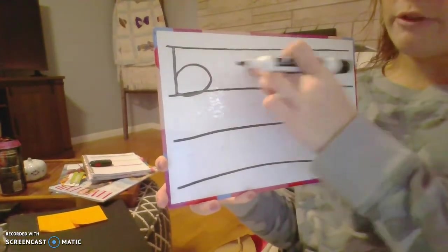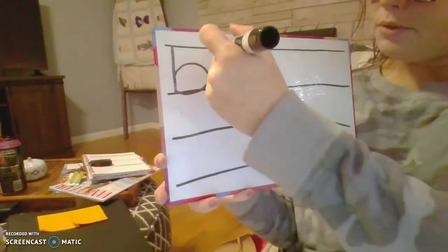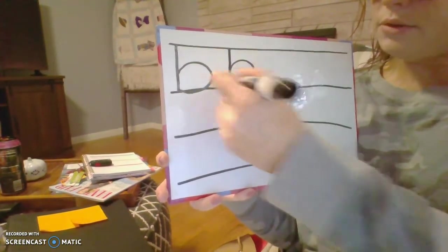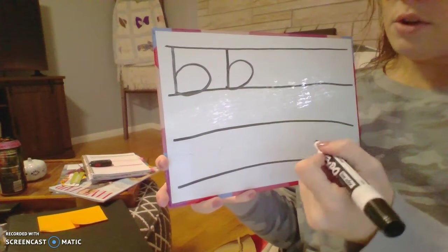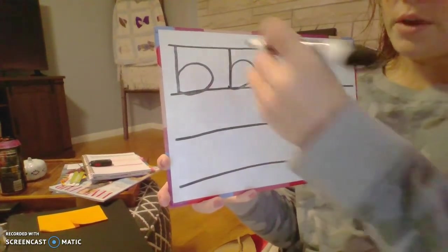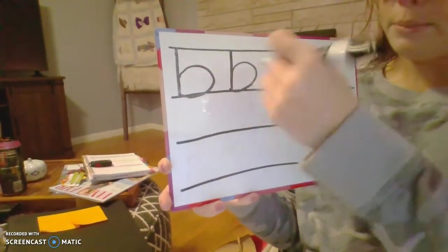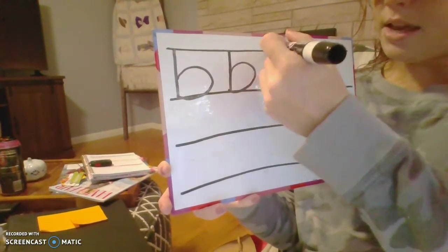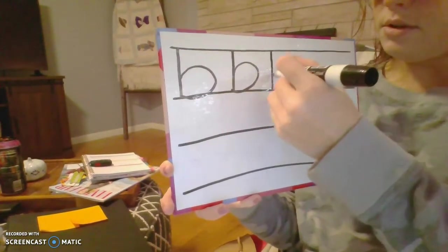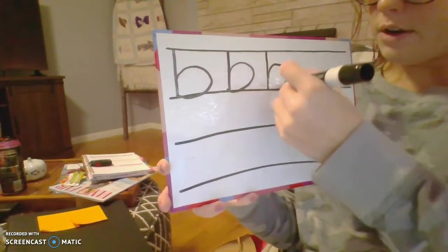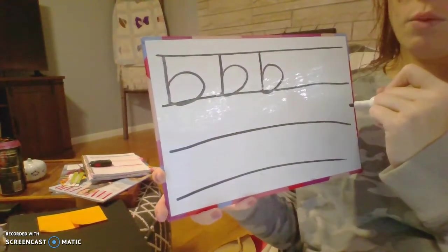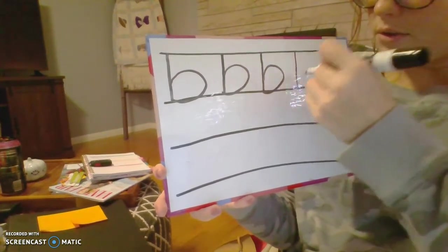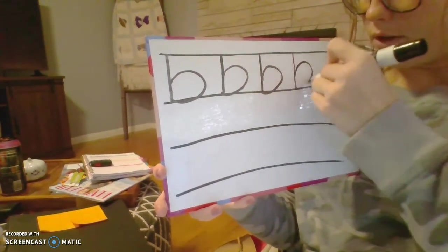We're going to practice writing the letter B four times. Straight down, all around. We can call it a curve, a belly, whatever you want to call it. Straight down, big curve around. Let's do it one more time — straight down, big curve around.